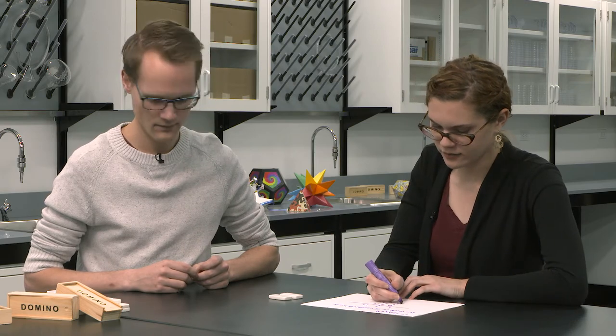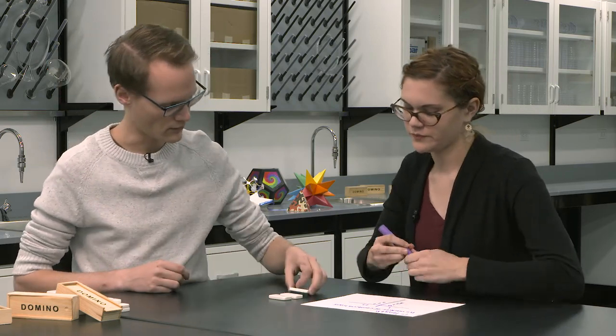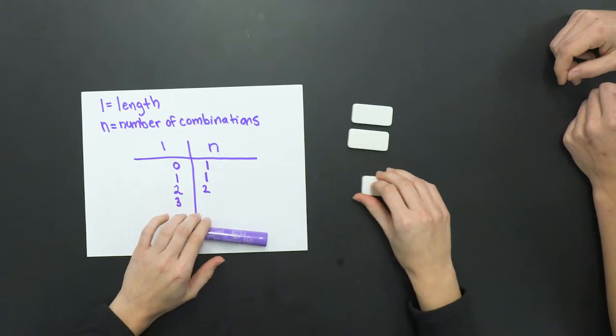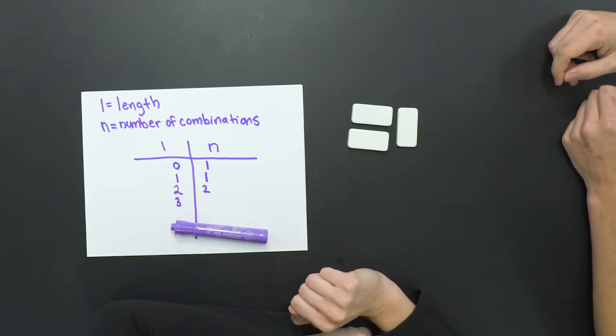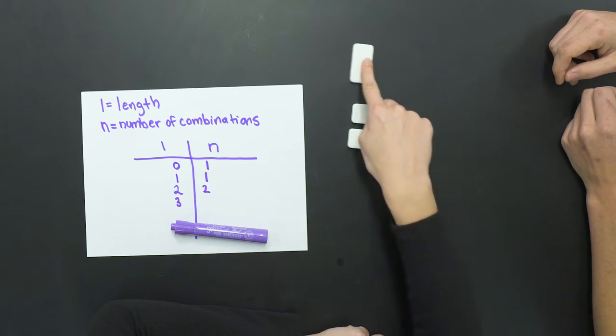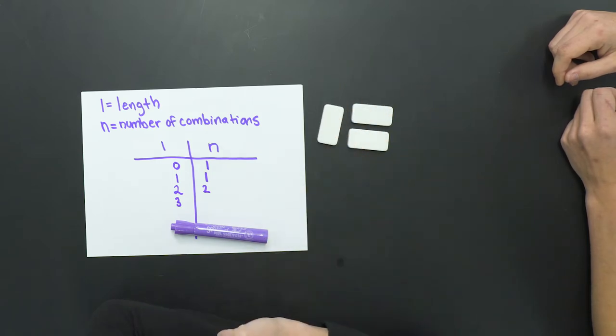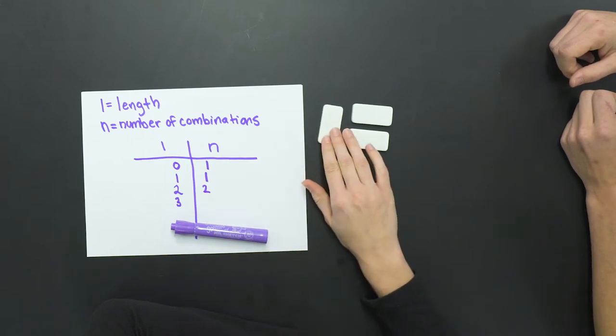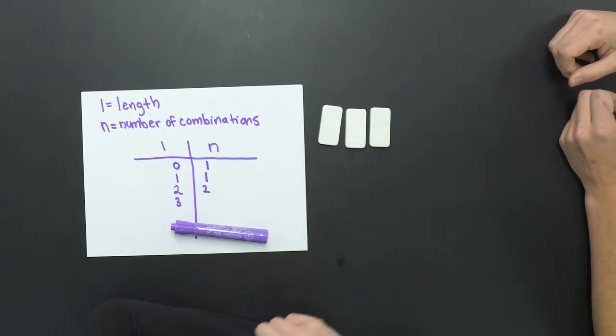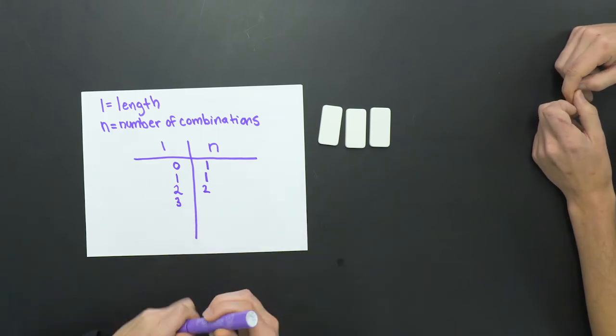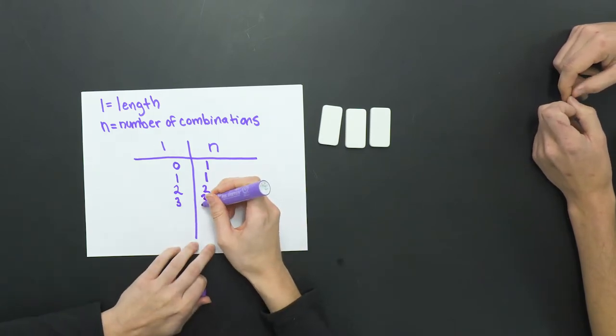Now I'd like to look at a length of three. So can you pass us another domino? Since it always has to be two I'm going to do one here. Now Peter if I move it to this side does that count as a new combination? It does. So that will be two. And then the last combination that I can see is like so. So that would be three different combinations for a length of three.